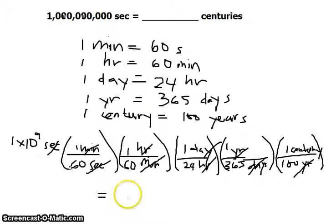And, using your calculator, you would get something like this figure: 0.317 of a century. And that's it.